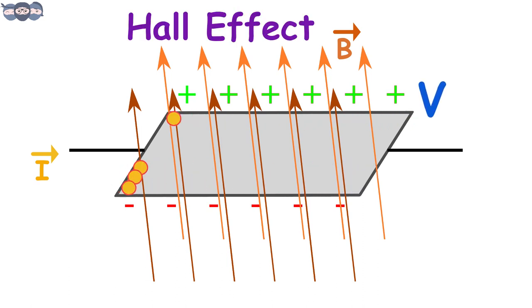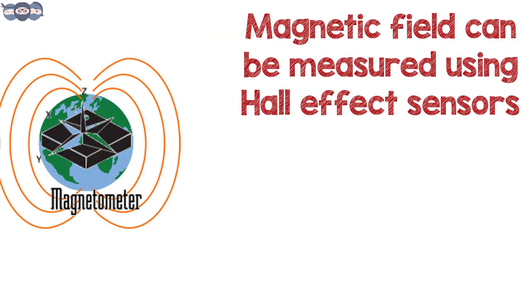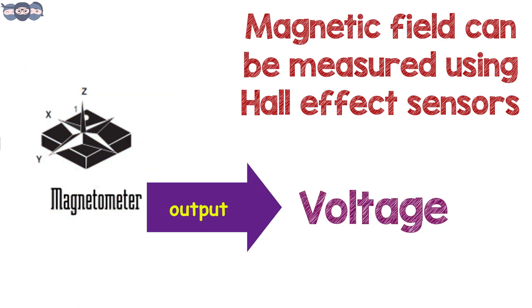This principle is called the Hall effect. Using this principle, we can measure magnetic field using Hall effect sensors. Hall effect sensors employ the technique described in the video and give the output as a voltage which is proportional to the magnetic field.